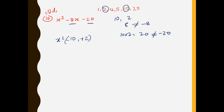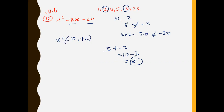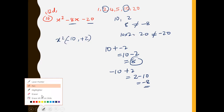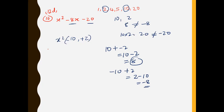Because we have negative 8, the biggest number takes the negative sign. If you give 2 the negative, you get positive 8. But negative 10 plus 2 equals negative 8, which is correct. So the factors are negative 10 and positive 2, giving us x minus 10 multiplied by x plus 2.